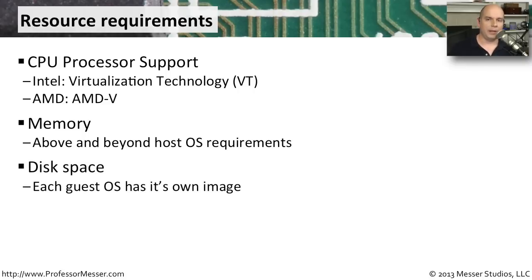If you think about different operating systems running on different computers, they all use hard drive space. You might have Windows using 20 GB on one computer and Linux using 10 to 15 GB on another. If you're bringing those all onto one physical device, you're going to need that much additional physical disk space for each one. So not only are we using a lot of RAM, we're also going to be using a lot of disk space — make sure you have plenty of storage available.